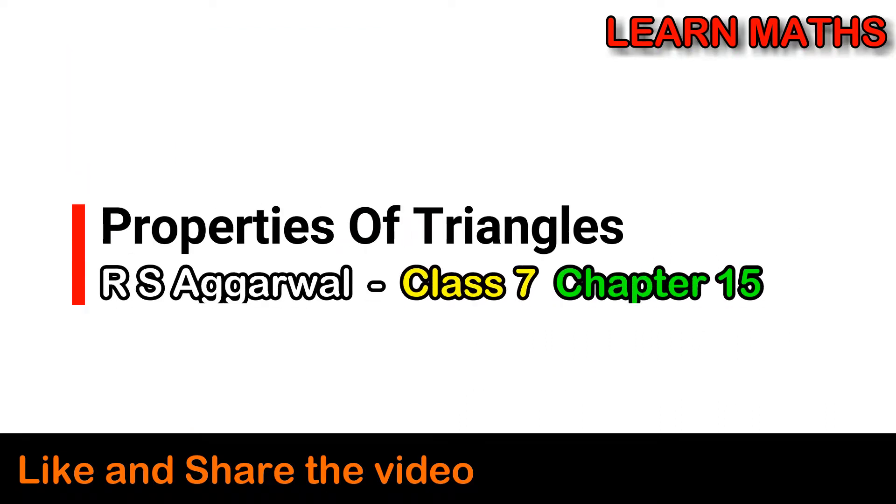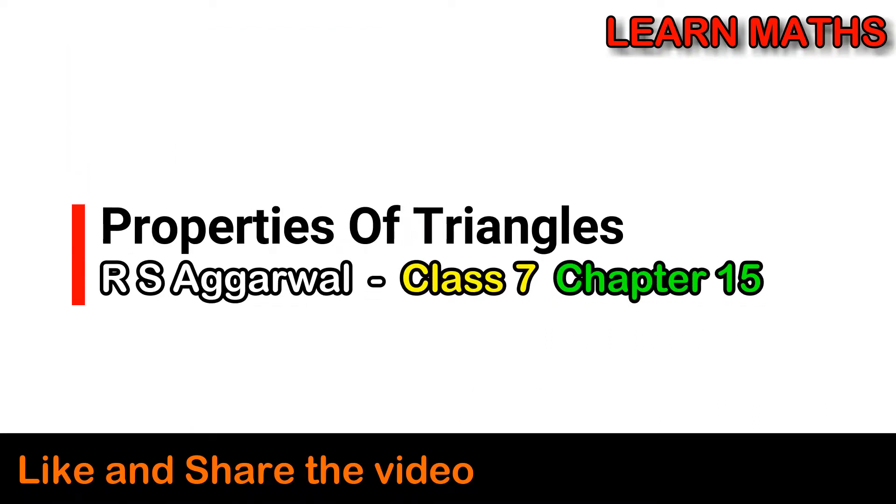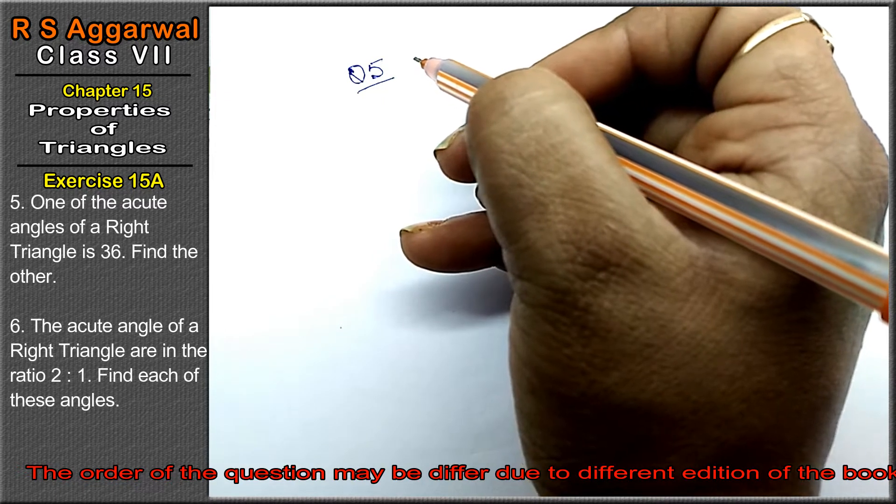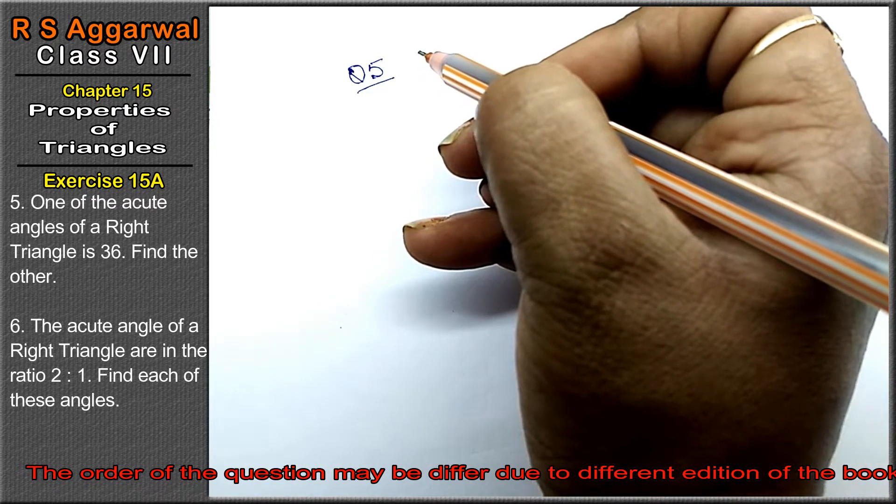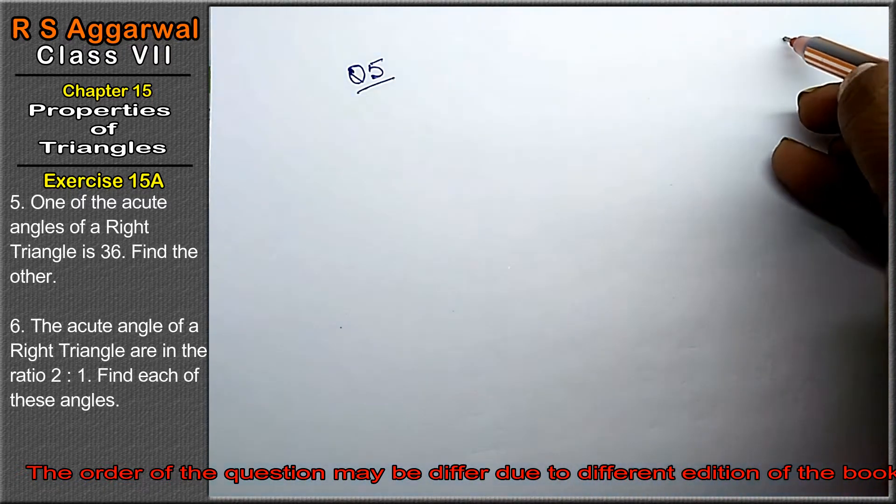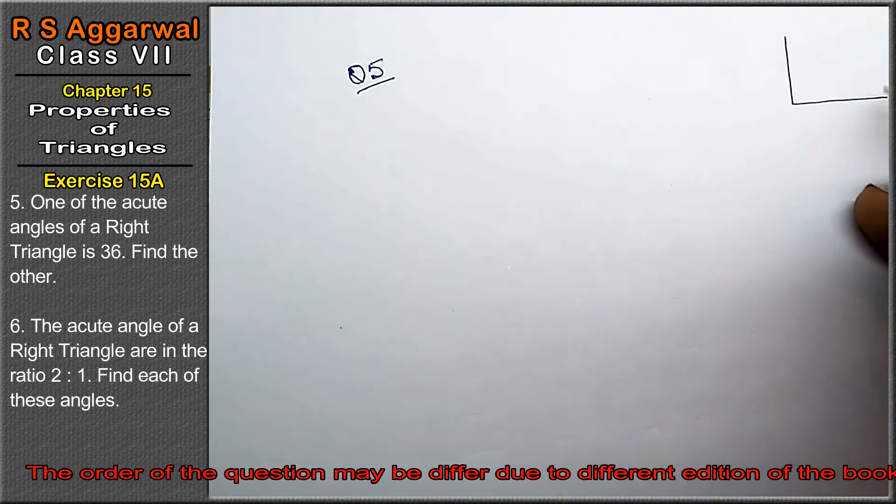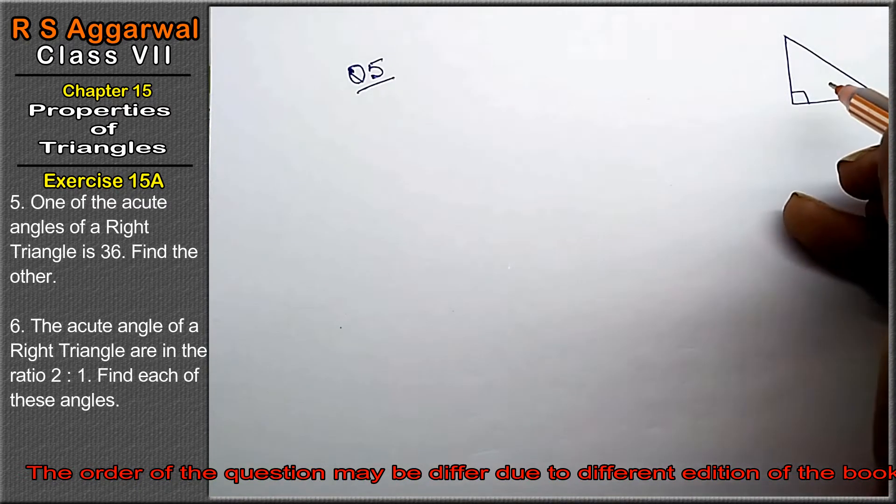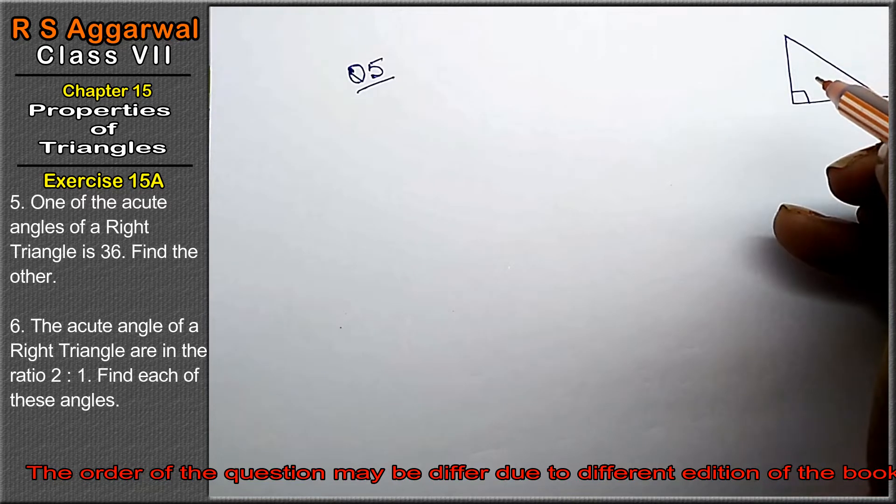Let's do question number 5 of exercise 15A, properties of triangles. Question number 5: one of the acute angles of a right angle triangle... A right angle triangle is a type of triangle in which one angle is 90 degrees because it is a right angle triangle.